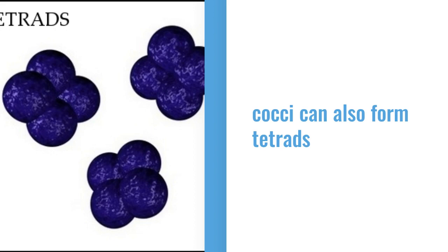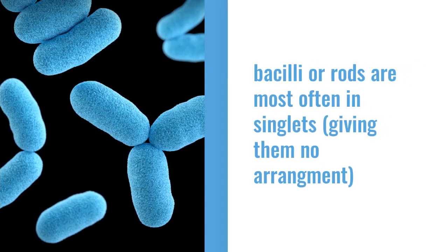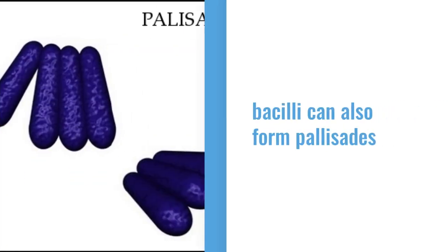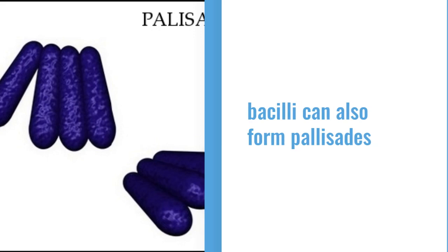It's actually common with staph. Your bacilli, also called rods, are most often found in singlets, so they really don't have any particular arrangement. Occasionally, rods can arrange themselves in palisades, which look like fences instead of chains. So that's not seen very much, but it's possible.